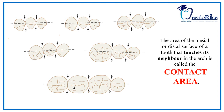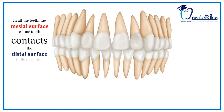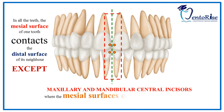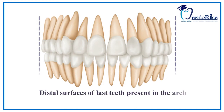Notice the arrows present in the figure. However, it is not always the case that the mesial surface of one tooth contacts the distal surface of another tooth — there are exceptions. The first exception is the contacting surface of the maxillary and mandibular central incisors. Here, the contacting surfaces of the maxillary and mandibular central incisors face towards the midline, meaning the mesial surface of the right maxillary central incisor contacts the mesial surface of the left maxillary central incisor, and similarly for the mandibular central incisors. Another exception is the distal surfaces of the last teeth present in the arch, since they have no teeth present distal to them and won't be contacting any surface.